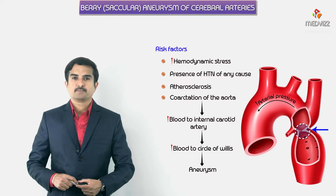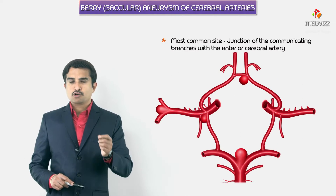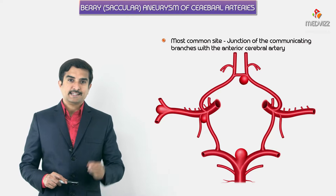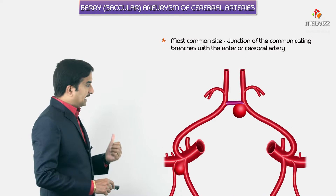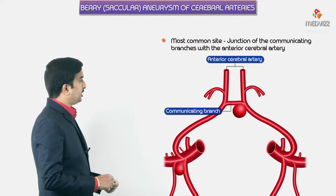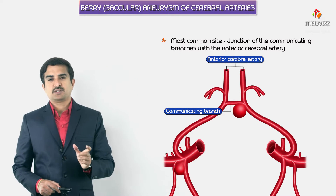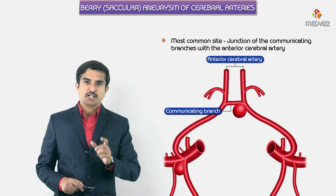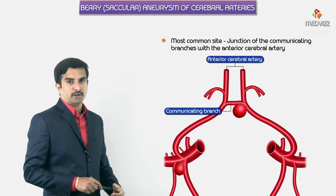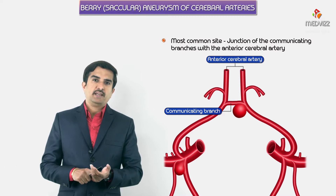For examination purposes, the most commonly asked question is: what is the most common site of a berry aneurysm? The most common site is at the junction of the communicating branches of the anterior cerebral artery, which is called the anterior communicating artery. This is the most common anatomical location for the development of berry aneurysms.